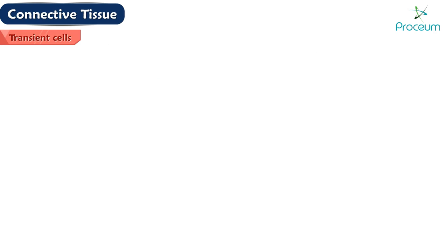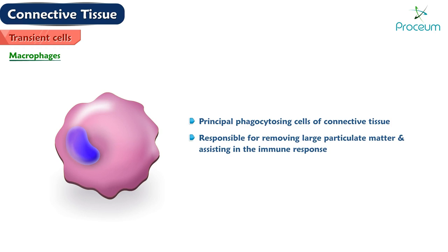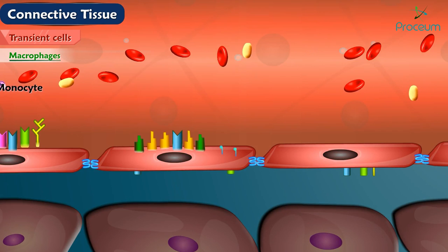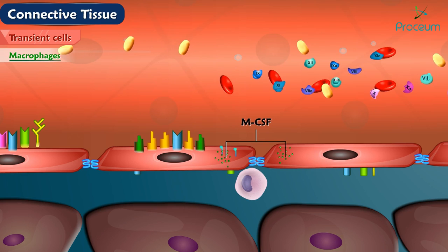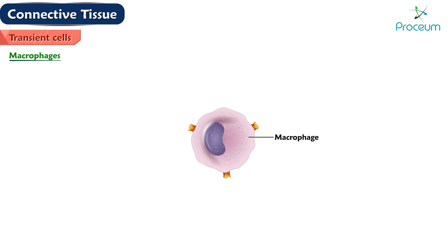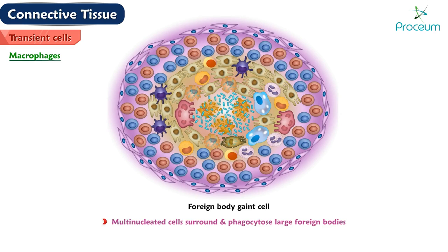Macrophages are the principal phagocytosing cells of connective tissue. They are responsible for removing large particulate matter and assisting in the immune response. They also secrete substances that function in wound healing. Macrophages originate in the bone marrow as monocytes, circulate in the bloodstream, and then migrate into the connective tissue where they mature into functional macrophages. When activated, they display philopodia, an eccentric kidney-shaped nucleus, phagocytic vacuoles, lysosomes, and residual bodies. When stimulated, they may fuse to form foreign body giant cells, which surround and phagocytose large foreign bodies.